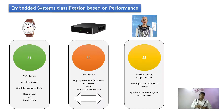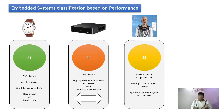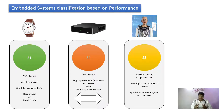Adding much more power to an S2 system gives us an S3 system. One unique feature of an S3 system is that it has special coprocessors along with a microprocessor — for example, graphics processing units. These systems have very high computation power with special hardware engines. An example of such a system could be an artificial intelligence-based robot.